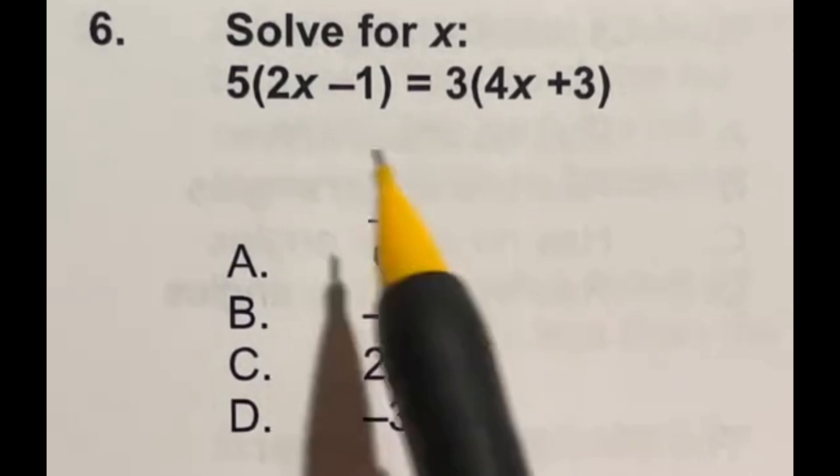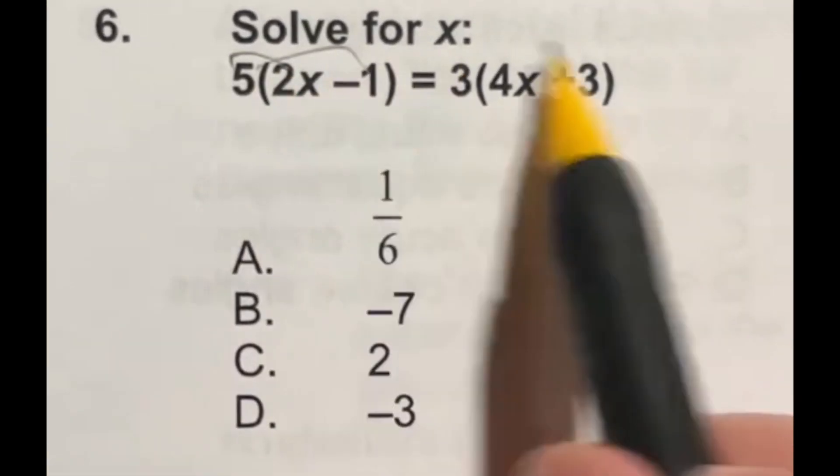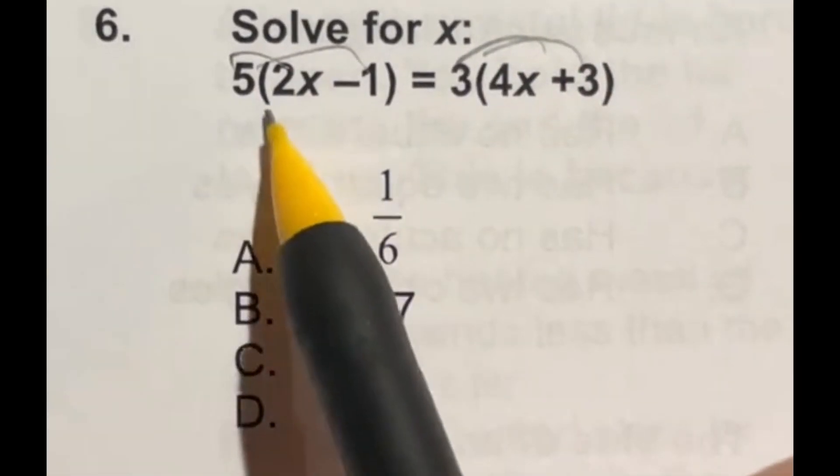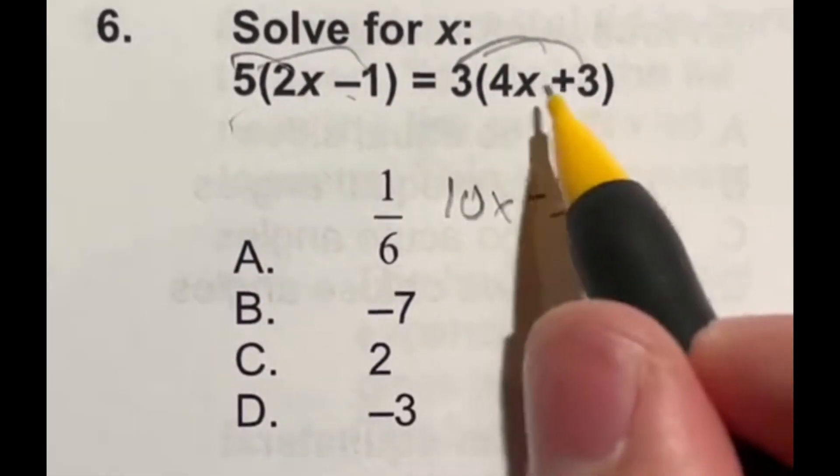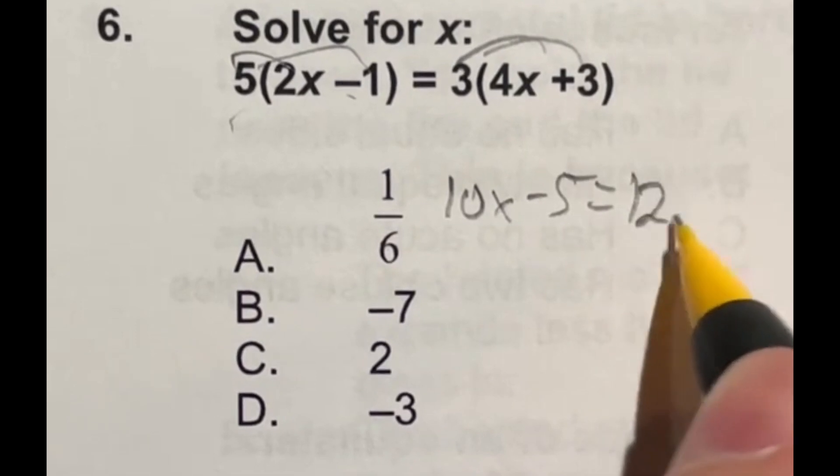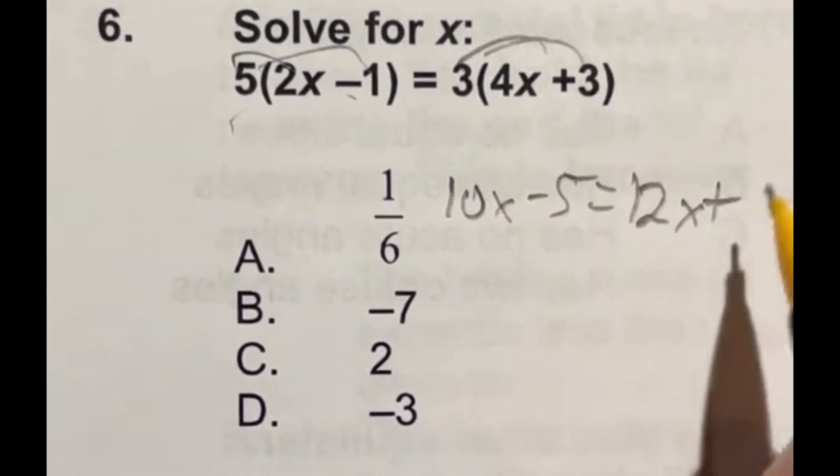Number six is to solve for x. First thing we're going to do is distribute this 5 and 3. So 5 times 2 is going to give me 10x minus 5 because you have to multiply that over there as well. 3 times 4 is going to give me 12x plus 3 times 3 is 9.